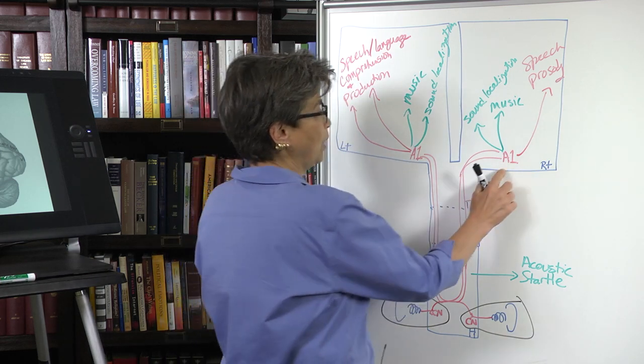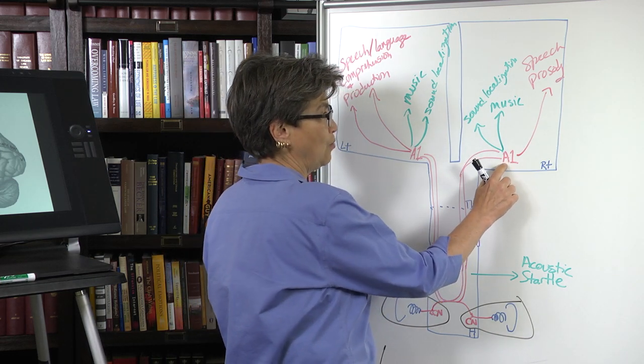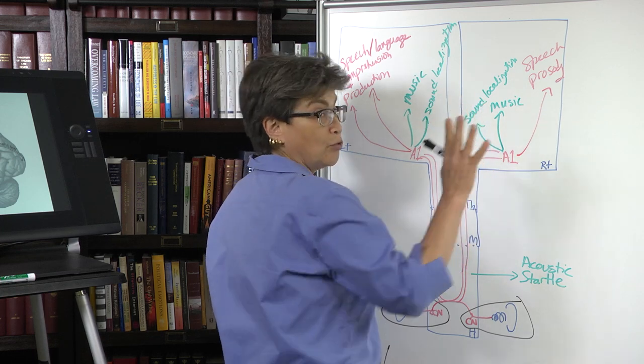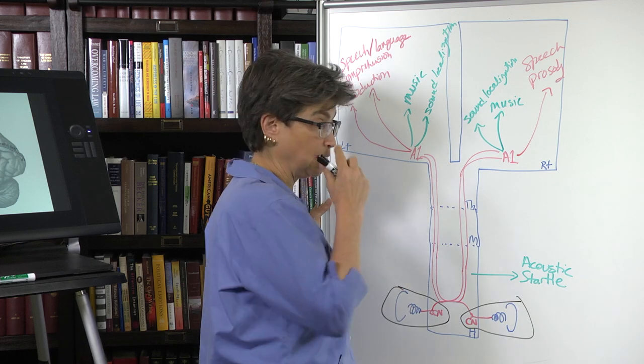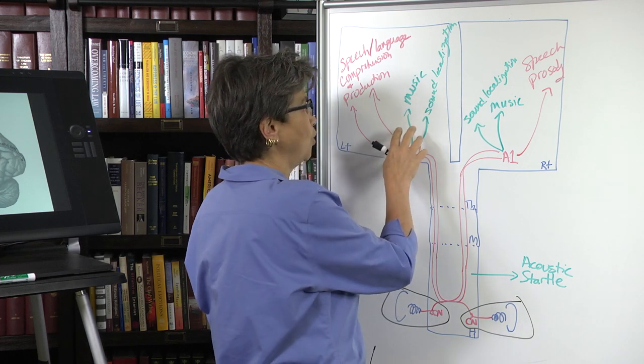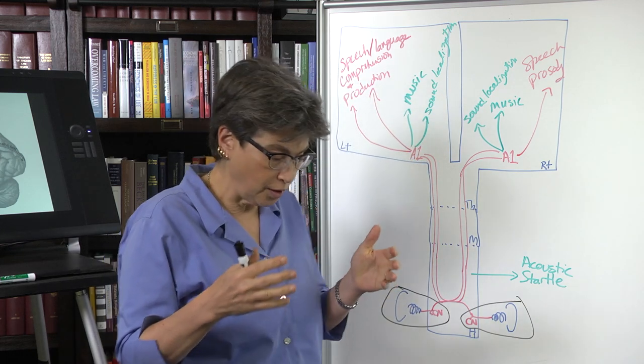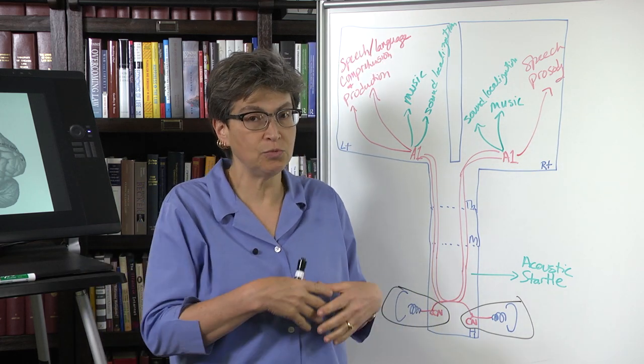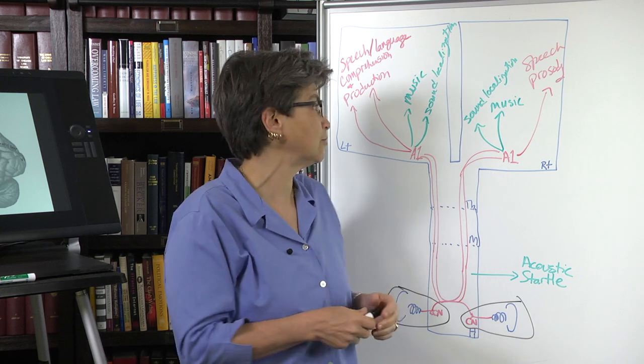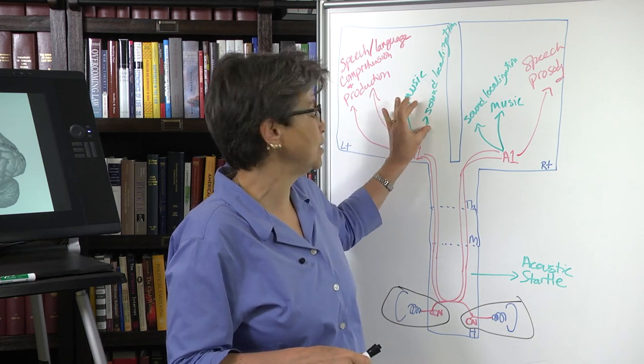Once we get to primary auditory cortex, or A1, there are three functions. One is speech/language, and we'll look at that. And the other two are music, both understanding music, producing music, recognizing music, remembering tunes, etc. And the other one is sound localization.